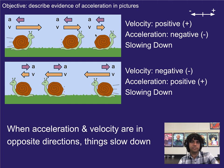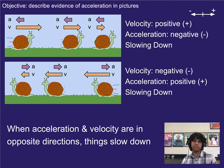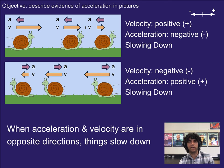On the flip side, if we see something slowing down, then velocity and acceleration are in opposite directions. Here the snail is moving to the right — that's a positive velocity — but we know it's slowing down based on the spacing, so the acceleration is negative or to the left. In the other case, the snail is moving to the left, negative direction, and slowing down, so the acceleration is positive or to the right. Simple rule: speeding up means acceleration is in the same direction as velocity; slowing down means acceleration is in the opposite direction.